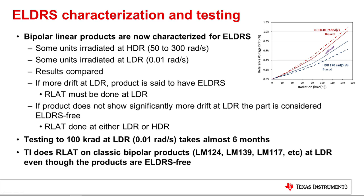Bipolar linear parts should be characterized for ELDRS. To do the characterization, some units are radiated at high dose rate and others at low dose rate, and the results are compared. If the drift at low dose rate is greater than at high dose rate, the part has ELDRS and RLAT must be done at low dose rate. If the product does not show significantly more drift at low dose rate, the part is considered ELDRS-free and RLAT can be done at either rate. Testing to 100K RADs at low dose rate can take almost six months. TI still tests some classic bipolar parts like the LM124 and LM139 at low dose rate, even though they've been shown to be ELDRS-free.